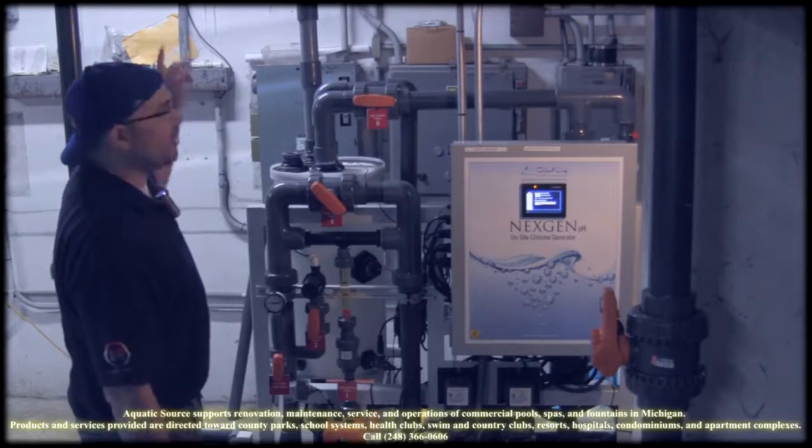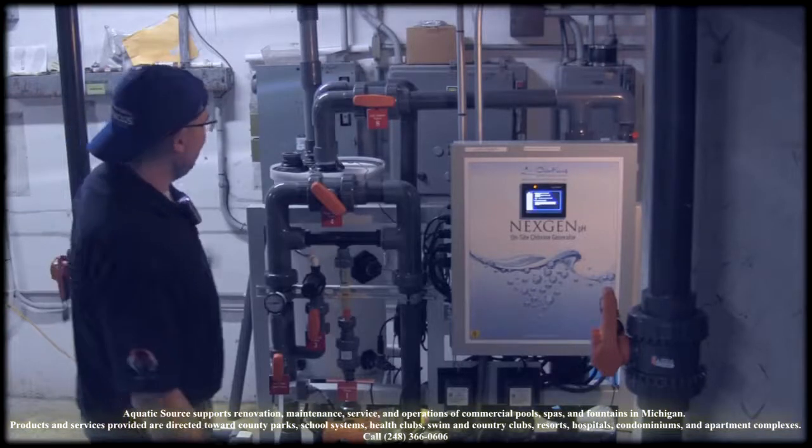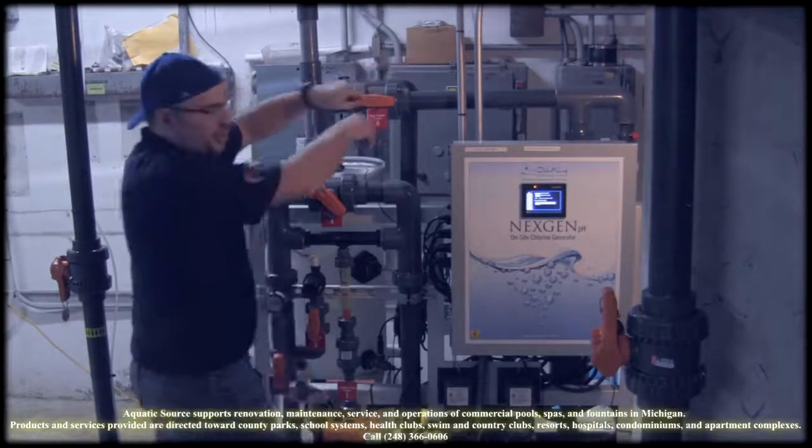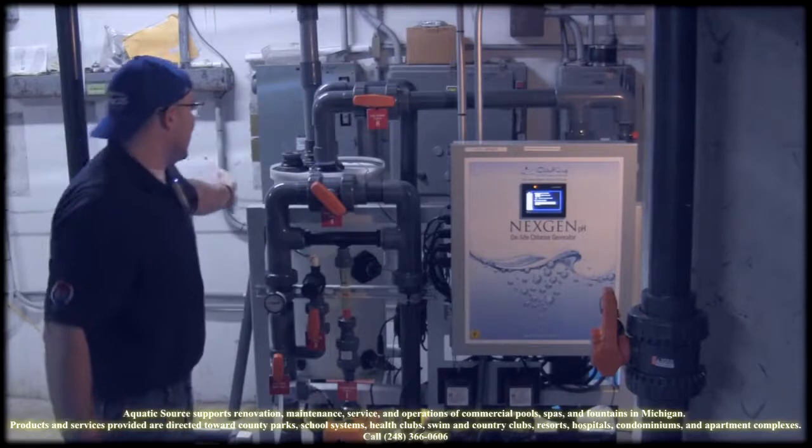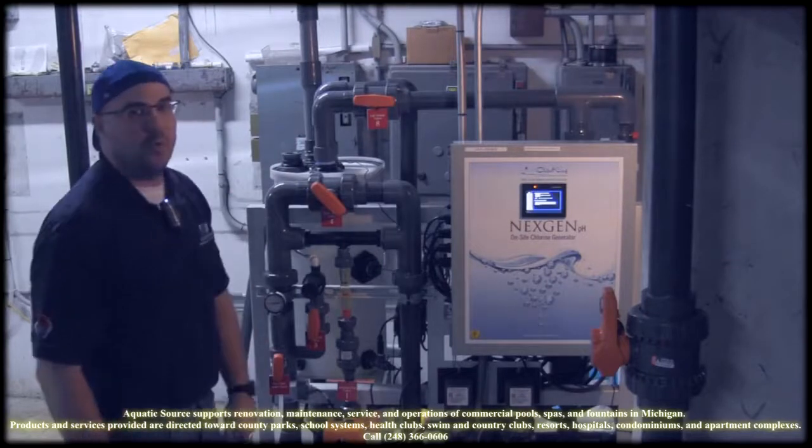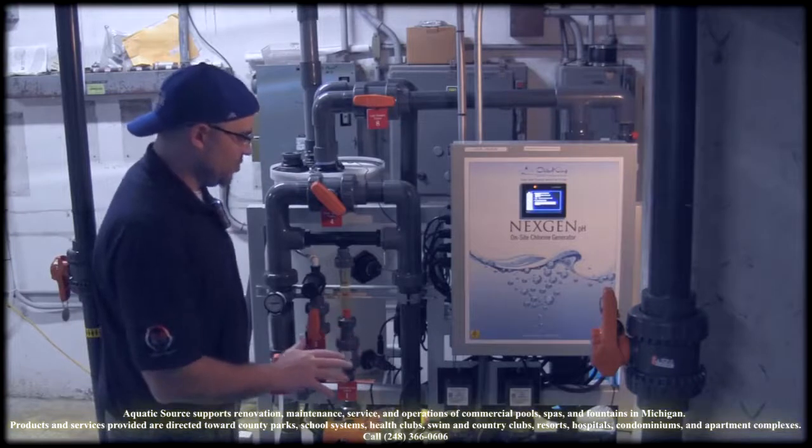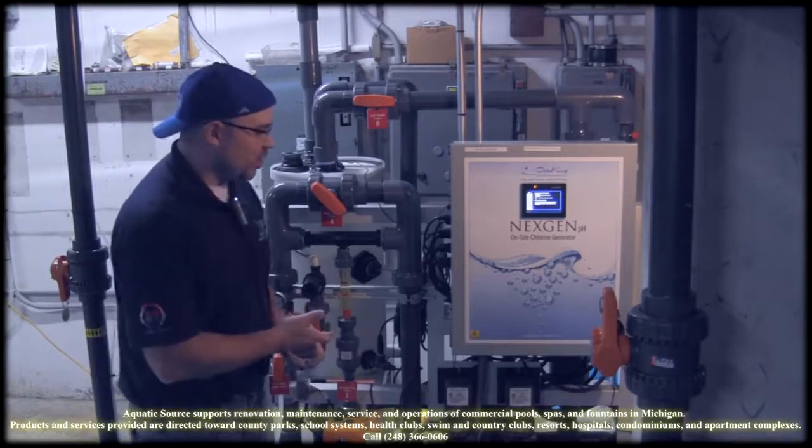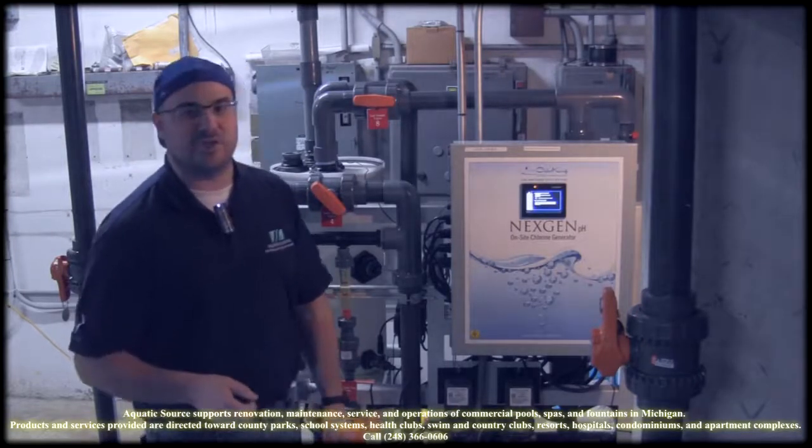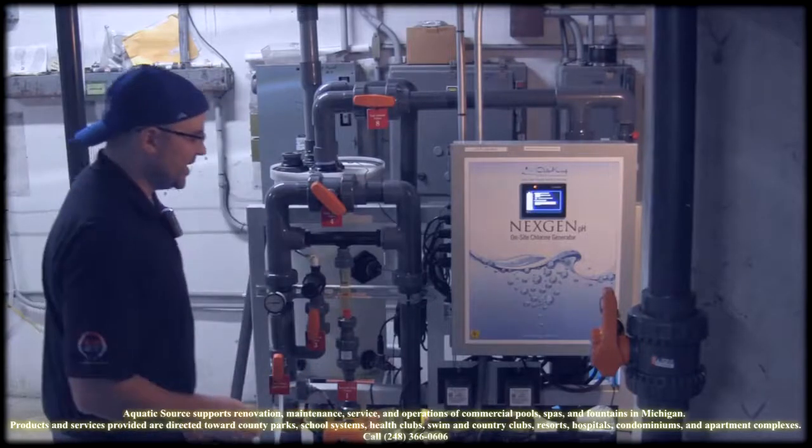It uses water from the swimming pool and it puts it through this cell that you can't see in the back here and makes chlorine on demand when the controller needs it. The really cool thing about this unit is that it's making chlorine and neutralizing the pH of that chlorine before it injects it into the system.